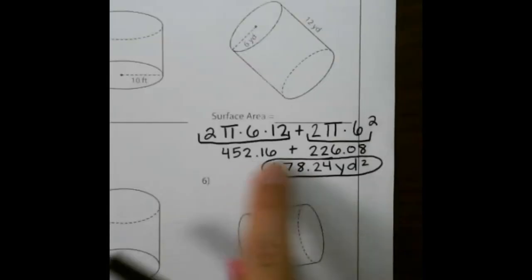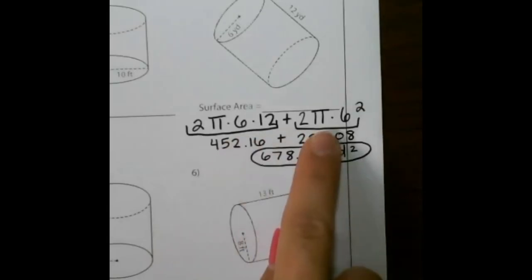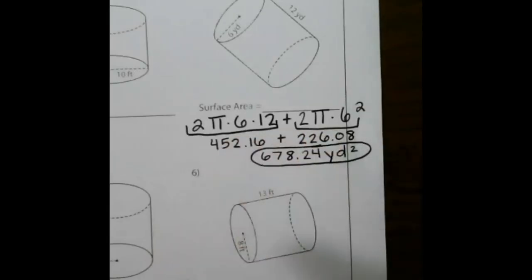So when we solve that, we get these two numbers and add them together to get 678.24 yards squared. Always make sure you plug your numbers in two times in your calculator just to be sure you have the correct answer.